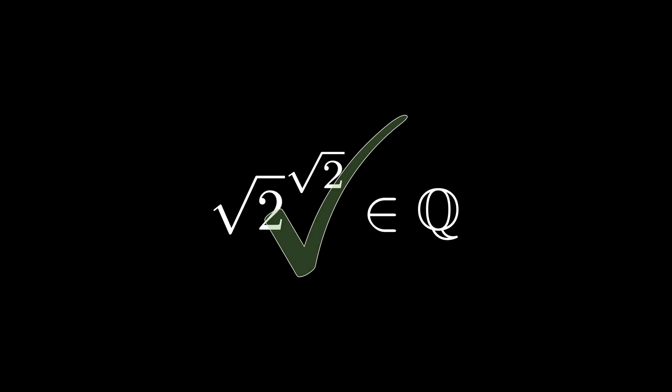So consider when x and y both equal the square root of 2. If root 2 to the root 2 is rational, well, we've solved the problem.